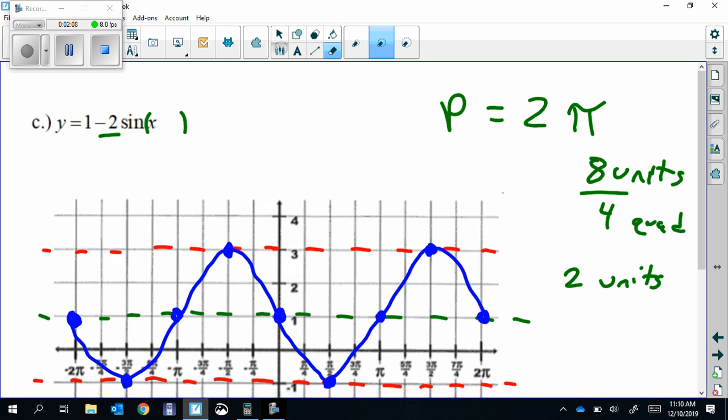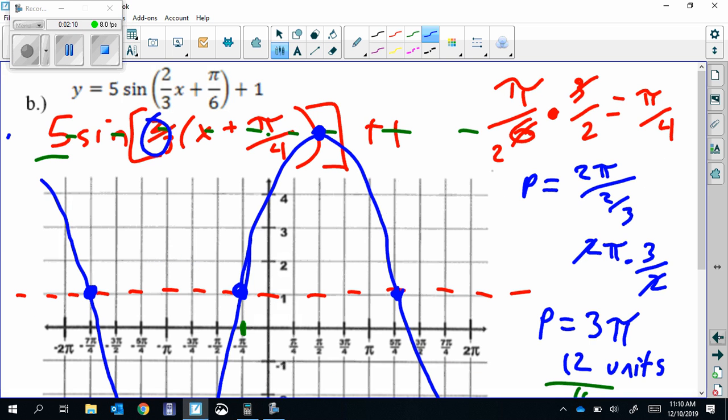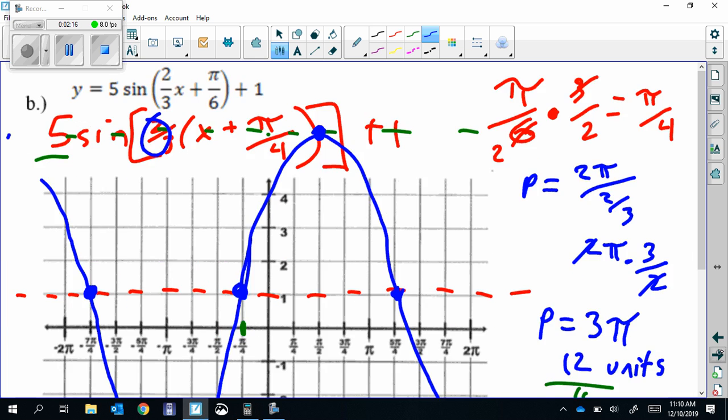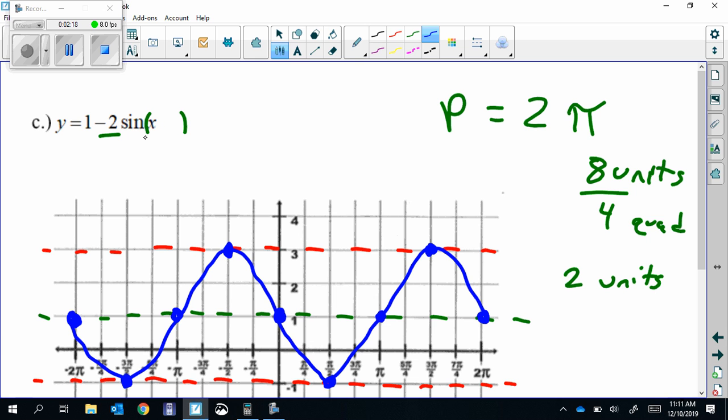We are also supposed to, according to the directions back here, rewrite it as sine or cosine, the opposite of whatever it started with. So, this one is written as a sine. We're going to rewrite it as a cosine.